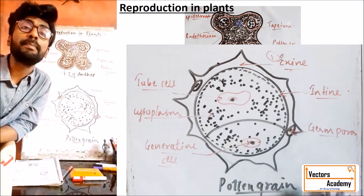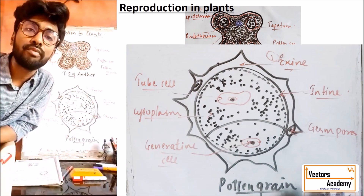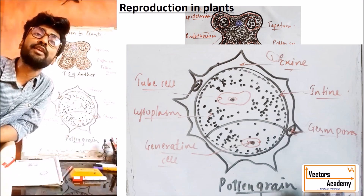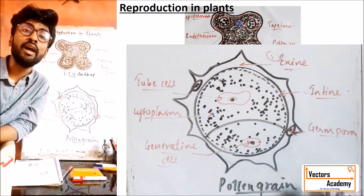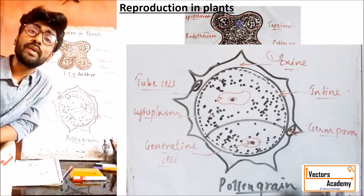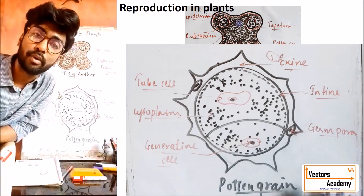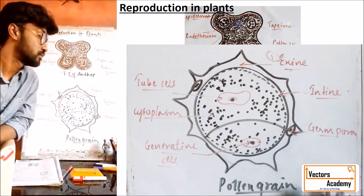That is the simple structure of a pollen grain, also called microsporangium. The process where there is formation of the pollen grain is generally called microsporogenesis.